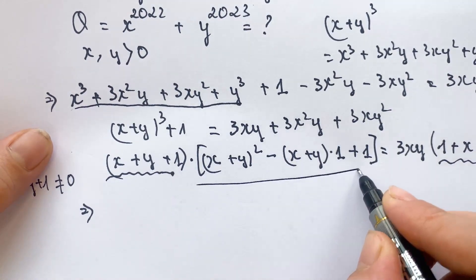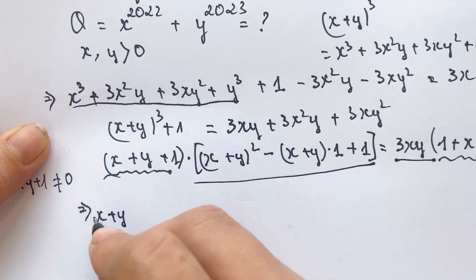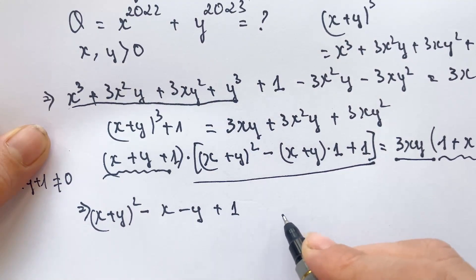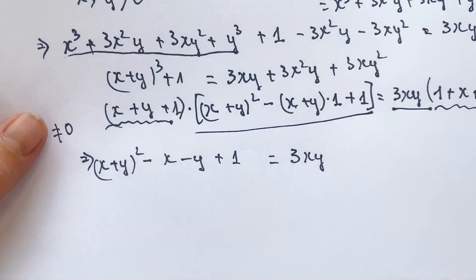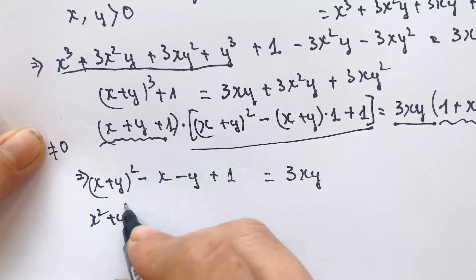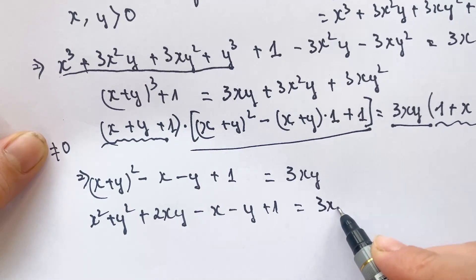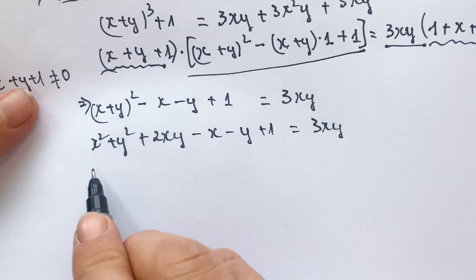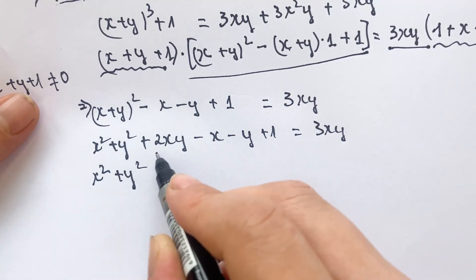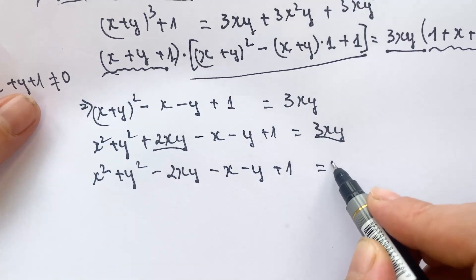So we also have like this, for both sides. Therefore, we can say (x + y) squared minus x minus y plus 1 equals 3x squared. And so, everyone look at that: x squared plus 2xy plus y squared minus 2x squared minus x minus y plus 1 equals 3x squared.